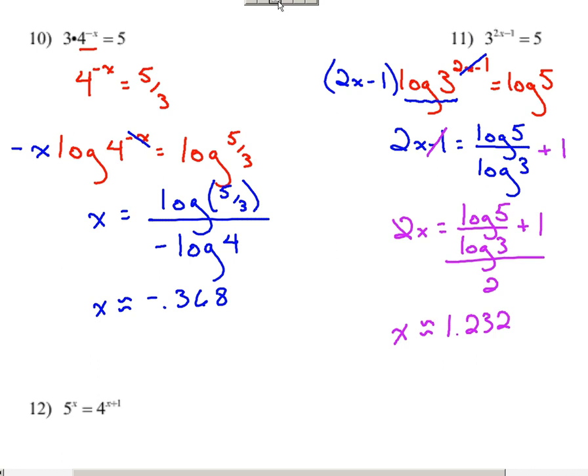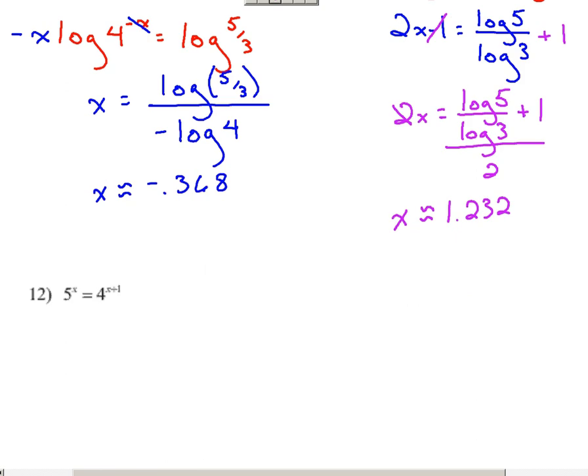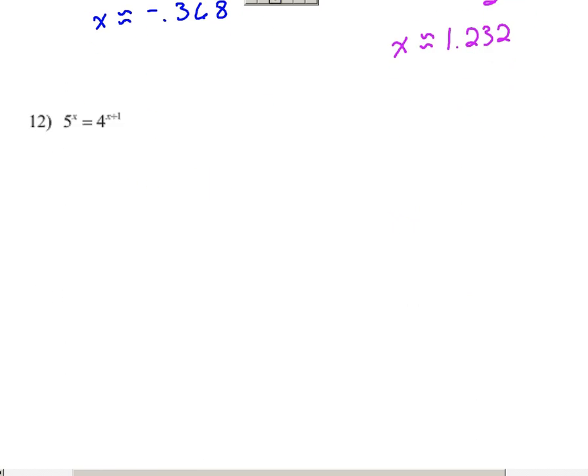All right, we've got one more. On this last one, we've got exponential expressions on each side. We've got five to the x on the left side equal to four to the x plus one on the right side. So we'll continue this theme of applying logarithms to each side, doing that to bring down the exponents. Since we've done this enough now, I'm going to go ahead and bring down the exponents all at one time.